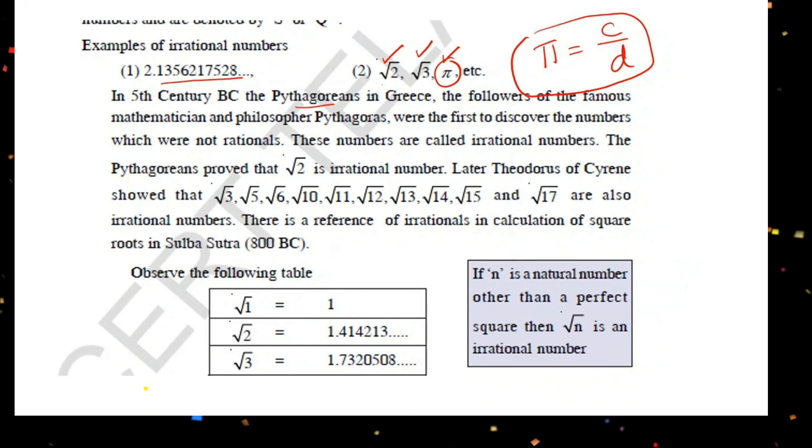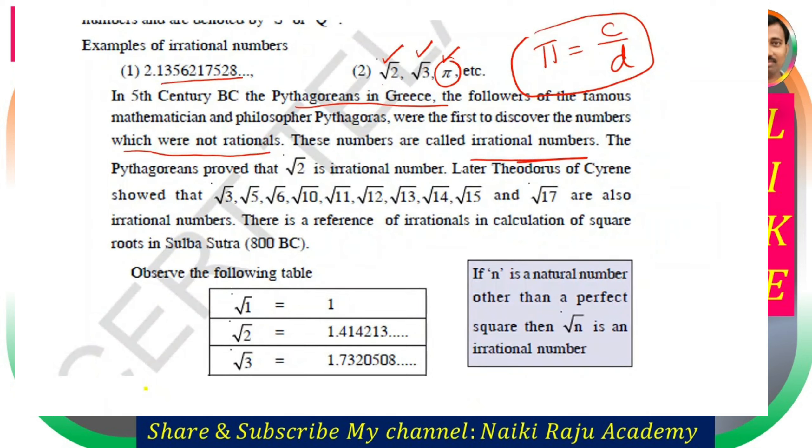In the 5th century BC, Pythagoras, a Greek mathematician and philosopher, discovered numbers which were not rational. These numbers are called irrational numbers. Pythagoras proved that root 2 is irrational. Later, Theodorus of Cyrene showed that root 3, root 5, root 6, root 7, root 11, root 12, root 13, root 14, root 15, and root 17 are also irrational numbers. References to irrational numbers and calculation of square roots can be found in Sulba Sutra before 800 BC.